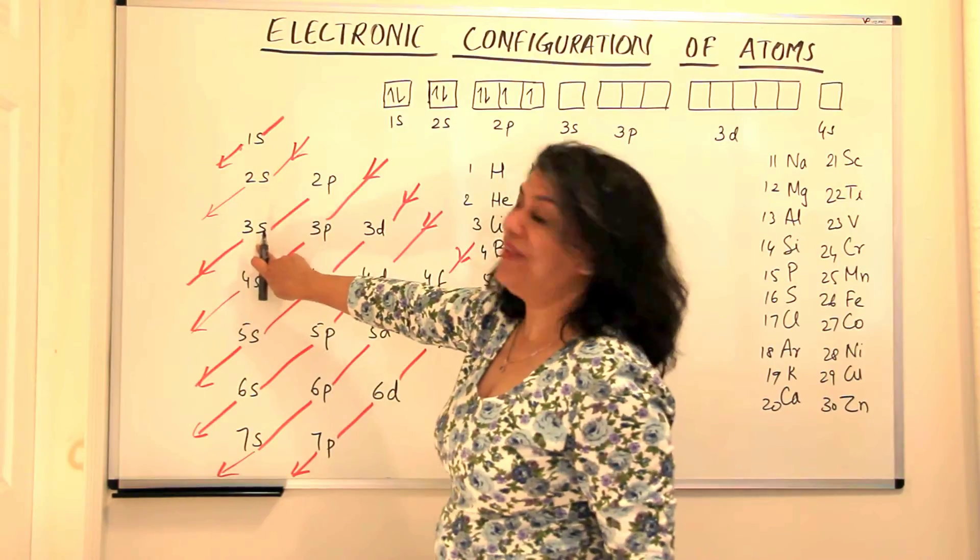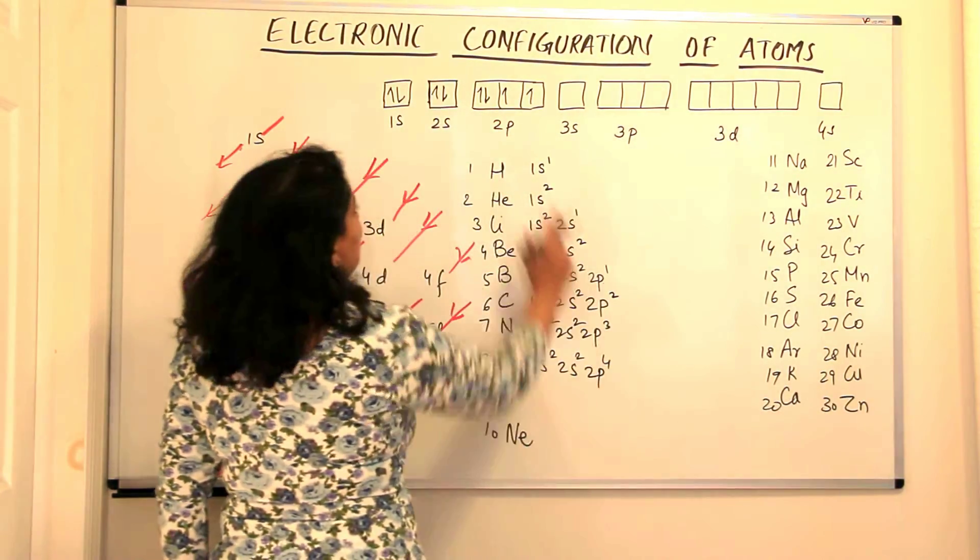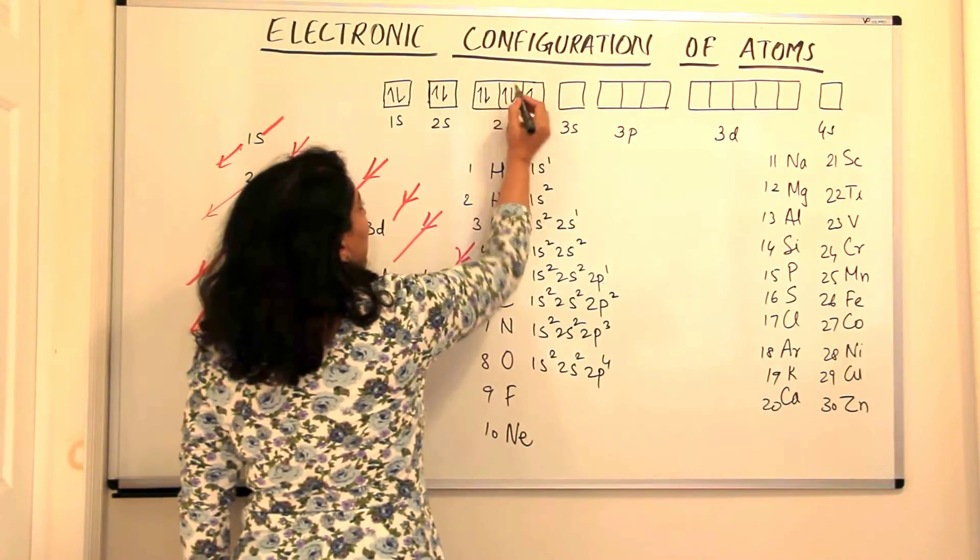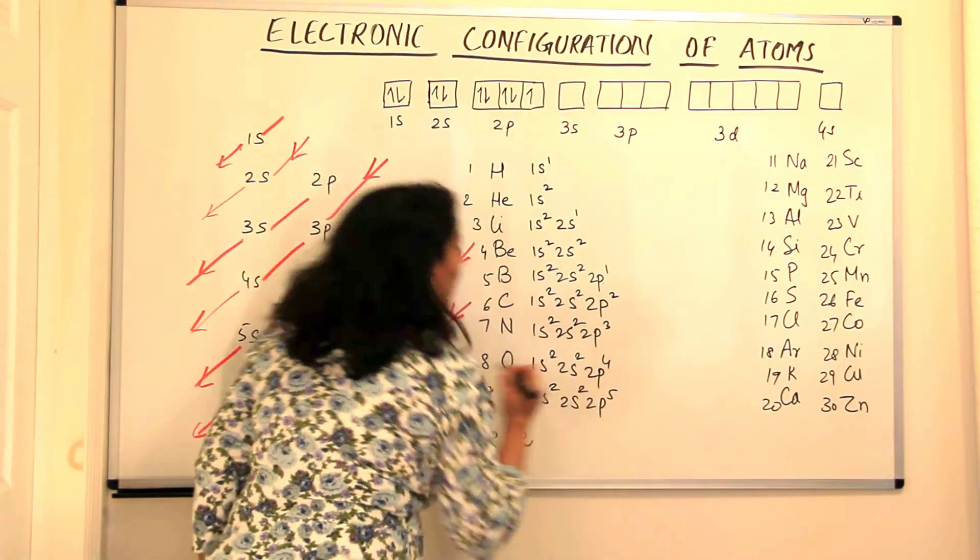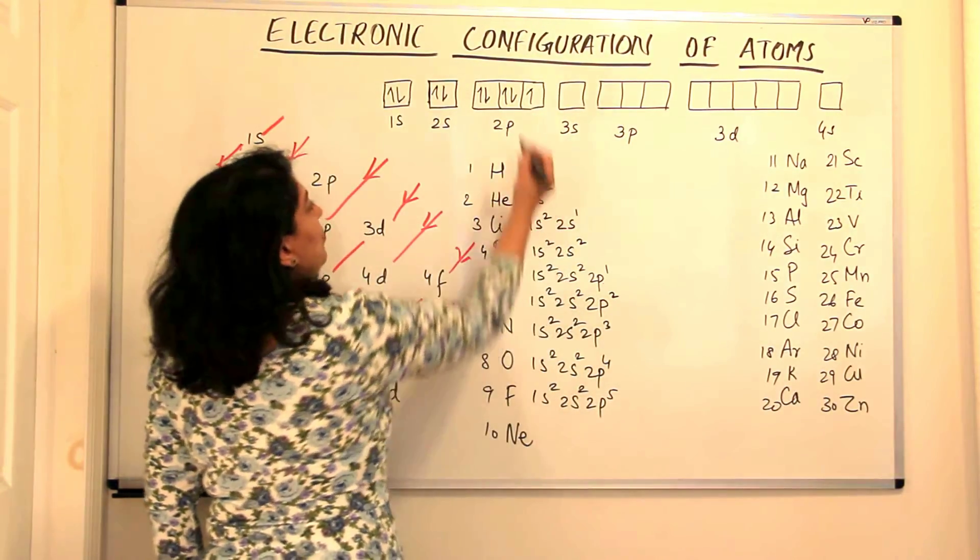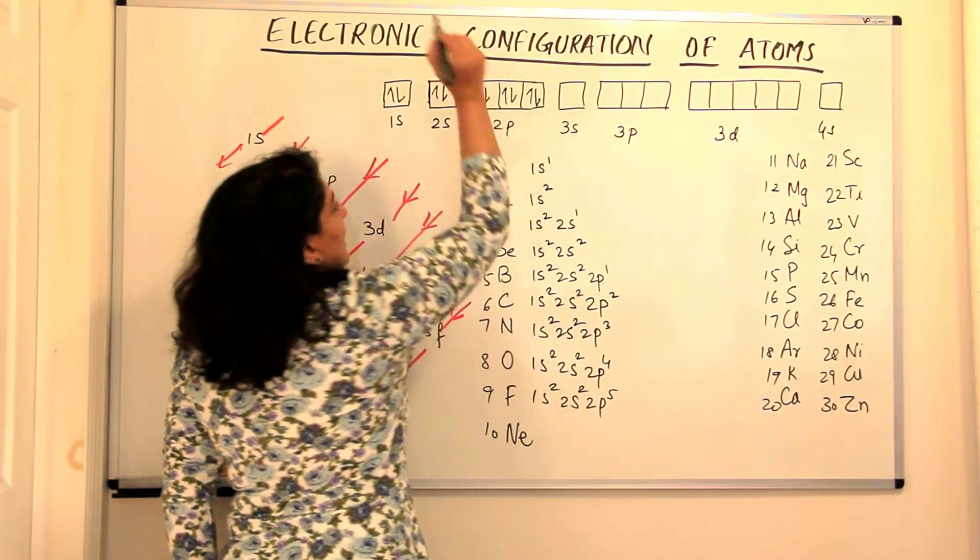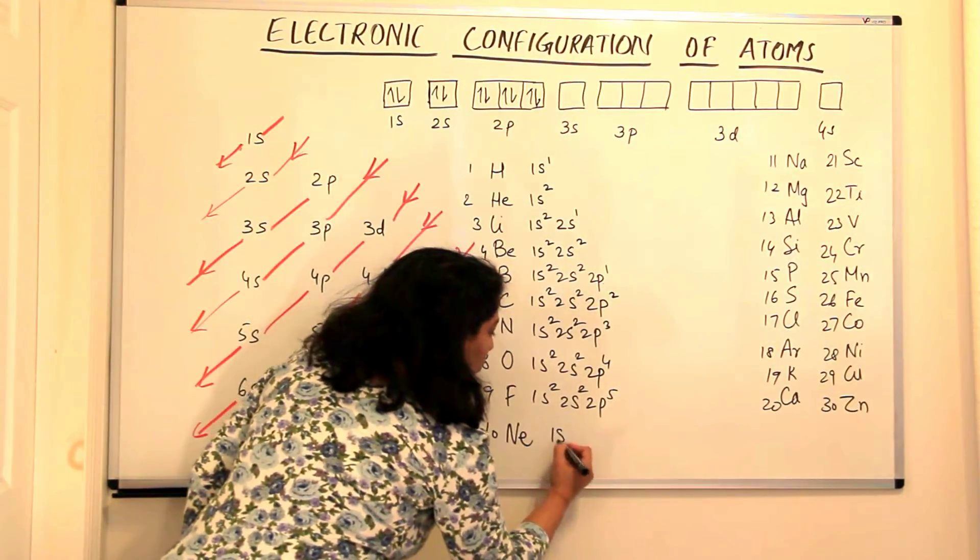Now the next element is fluorine. Fluorine has nine electrons. So we are now filling up the 2p orbitals here. After 2p orbitals, what will be filled up? The 3s. So let us first fill up. Oxygen has four electrons. Fluorine would have five. Therefore, the configuration would be 1s2, 2s2, 2p5. And the next element that is neon, which has 10 electrons, it will have the complete pairing here. That tenth electron will move to the third 2p orbital. So the configuration of neon will be written as 1s2, 2s2 and 2p6.